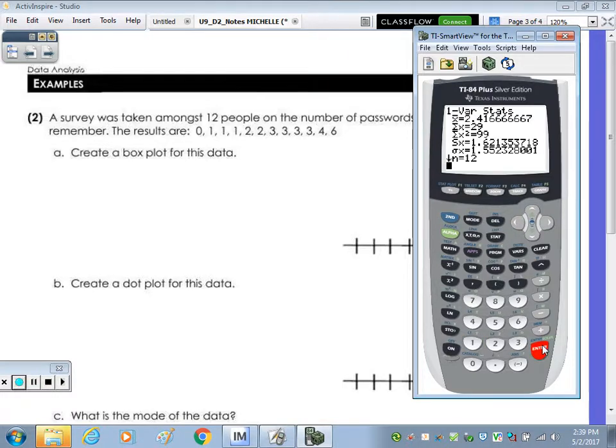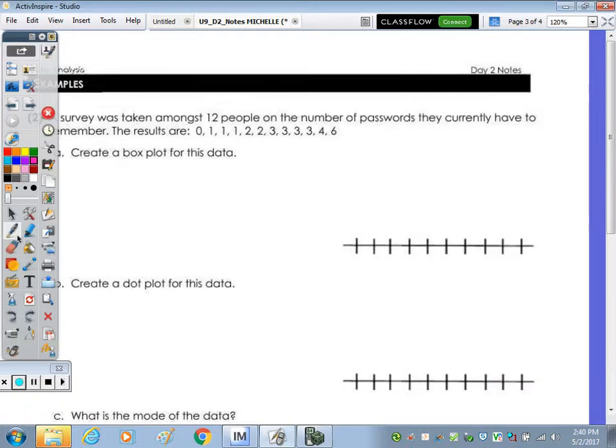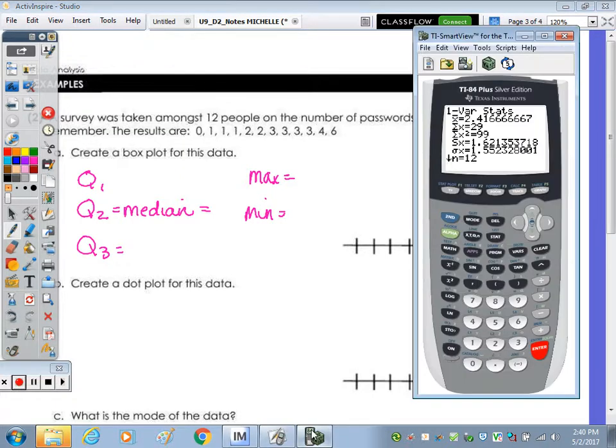So here's our five number summary for a box and whisker. What do you need? You need the five things. What do you need? The Q1, the median, and the Q3. We need our three quartiles. Good. And the max and the min. And we need the max and the min. Good. So in looking at your calculator, scroll down. We have a min of zero. Quartile 1 is 1, median 2.5, quartile 3 is 3, and max is 6. So 0 and 6, which you can see right from your data.